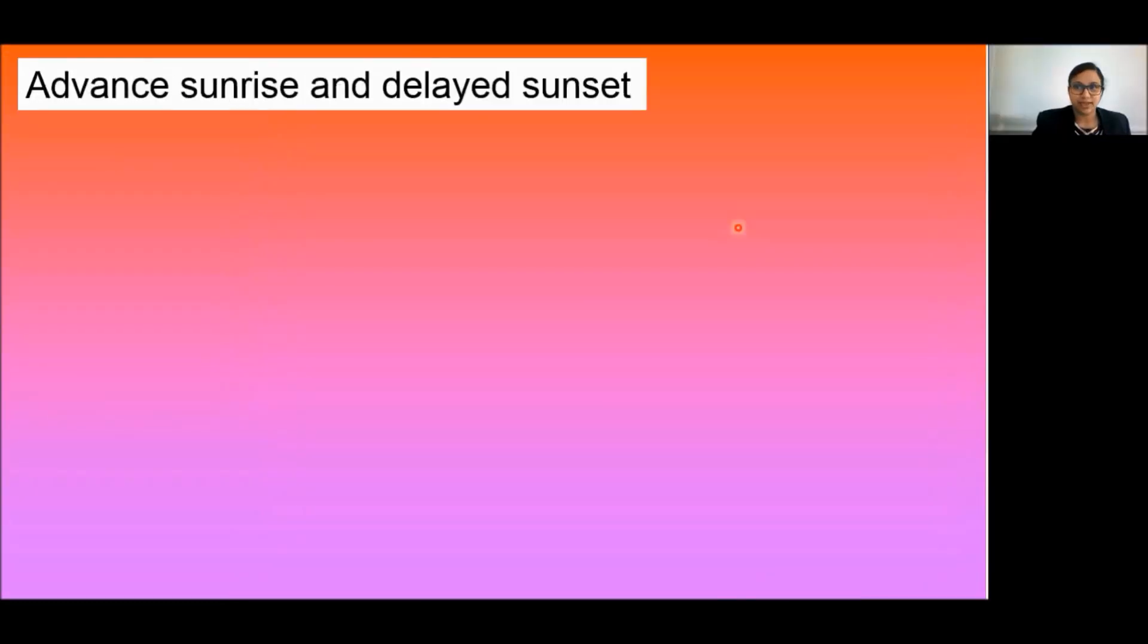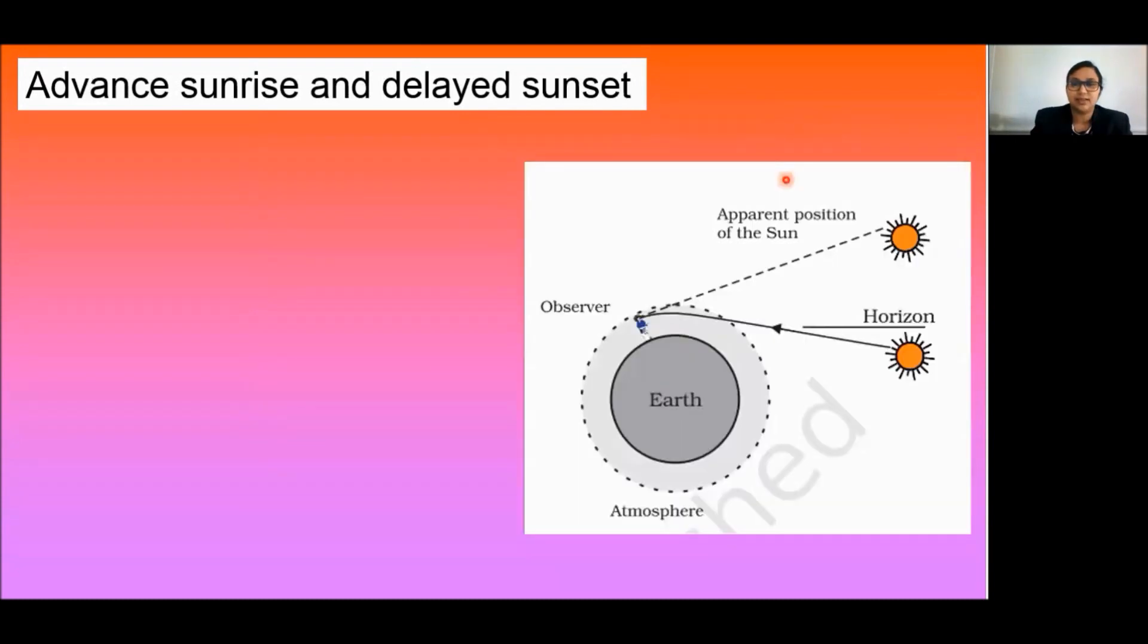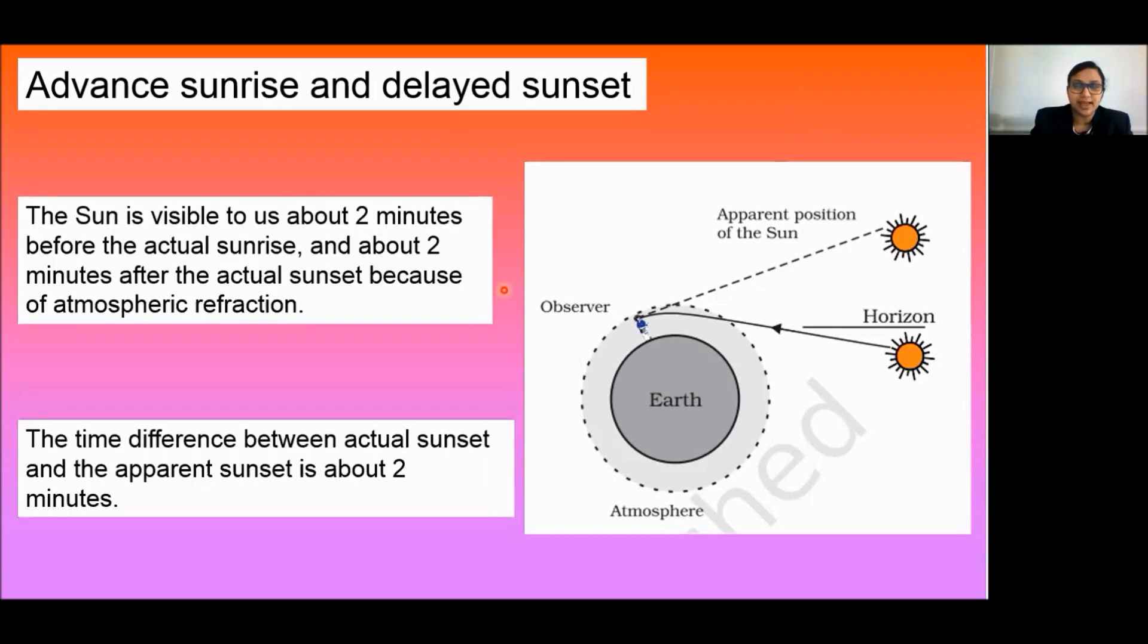Next, we learn about advanced sunrise and delayed sunset. Do you know the sun is visible to us two minutes before the actual sunrise and two minutes after the sunset? This is due to atmospheric refraction. The time difference between actual sunset and the apparent sunset is about two minutes.